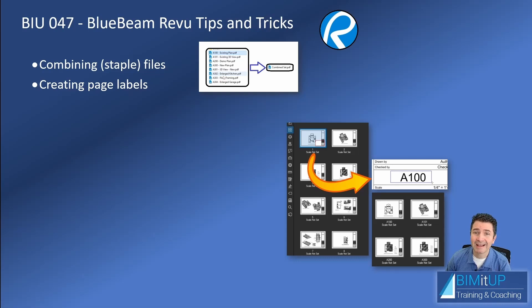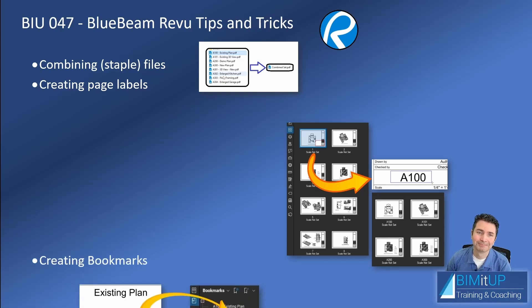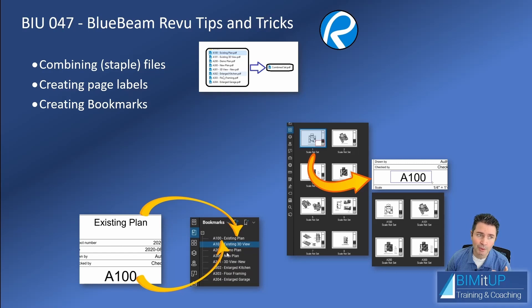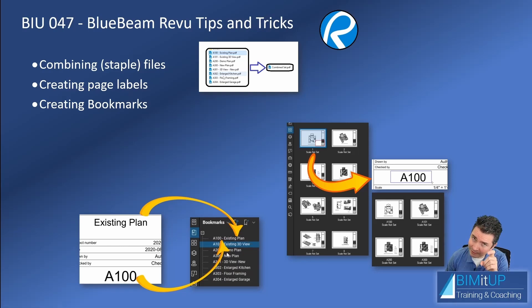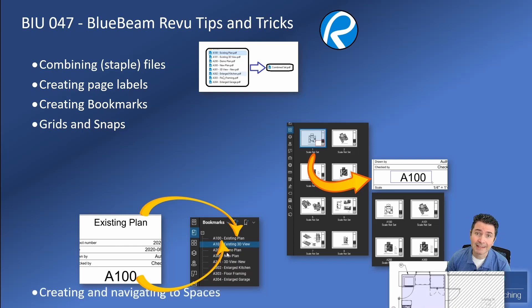That's done automatically with one click. Similarly, I'll show you how to create bookmarks — an index of PDFs based on information contained within the PDF. So if you have A100 as a sheet number and 'existing plan' as a description, you can have 'A100 - Existing Plan' for a hundred PDFs in a single document, all done with one click. I'll also touch briefly on grids and snaps.